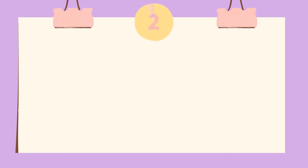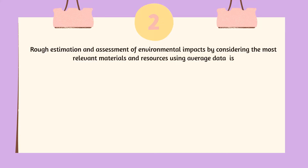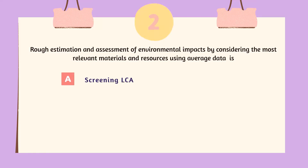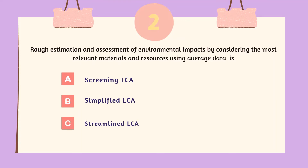Question 2: rough estimation and assessment of environmental impacts by considering the most relevant materials and resources using average data is: A. Screening LCA, B. Simplified LCA, C. Streamlined LCA. The answer is A, Screening LCA.